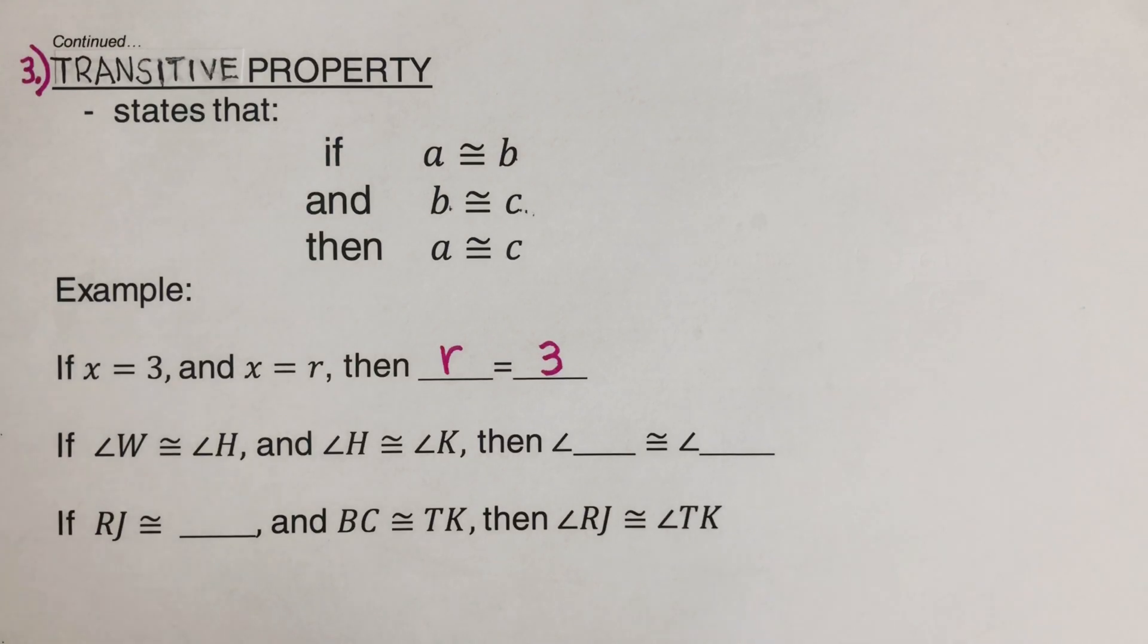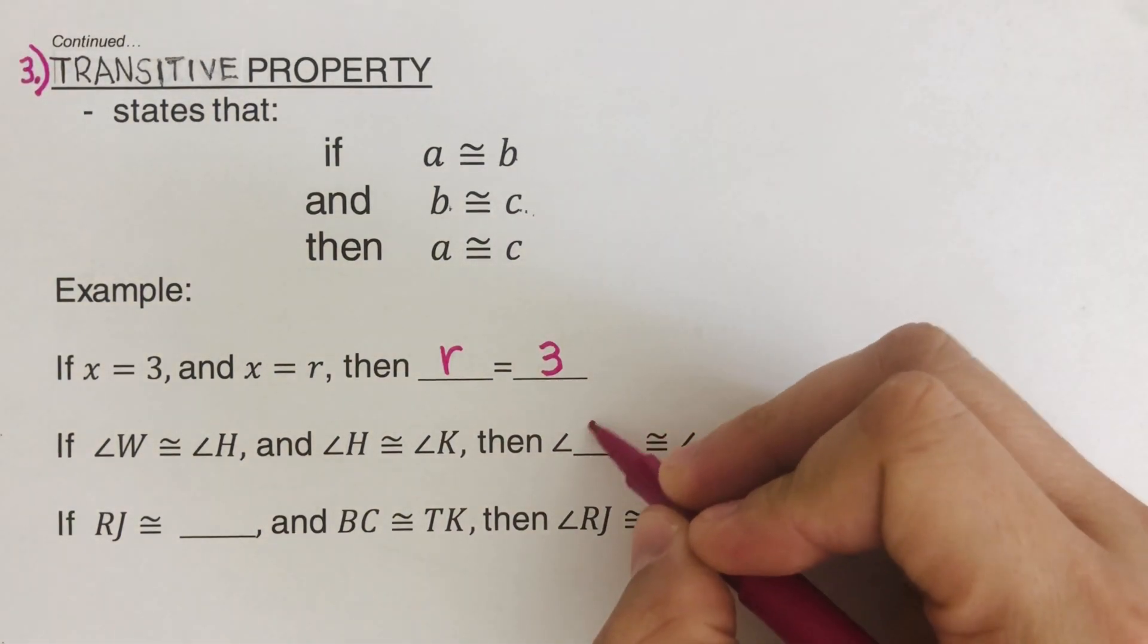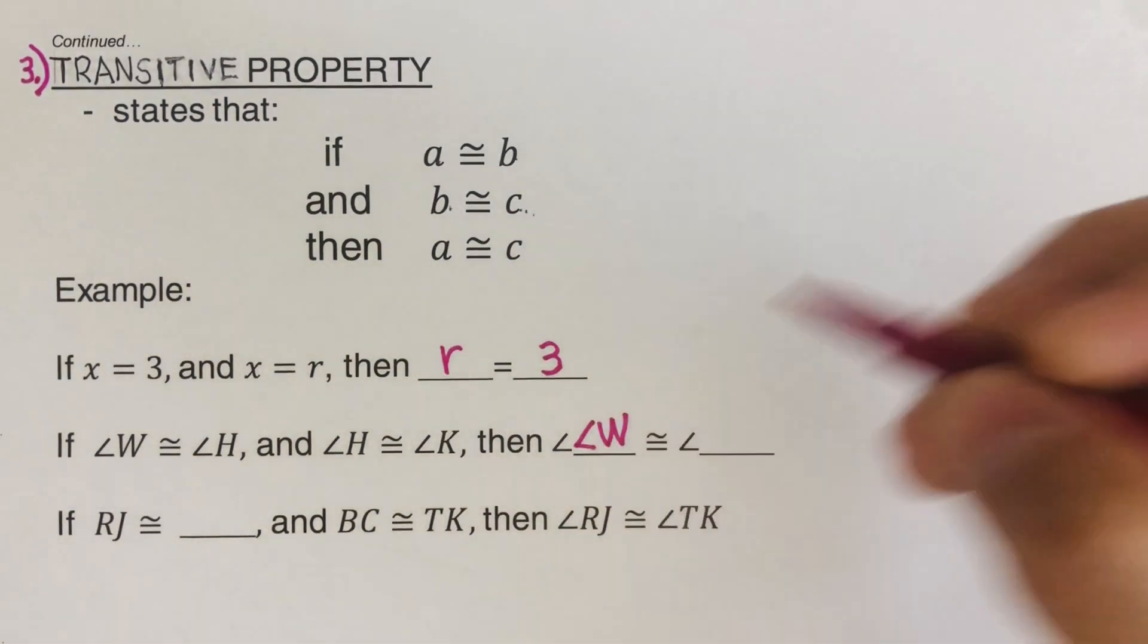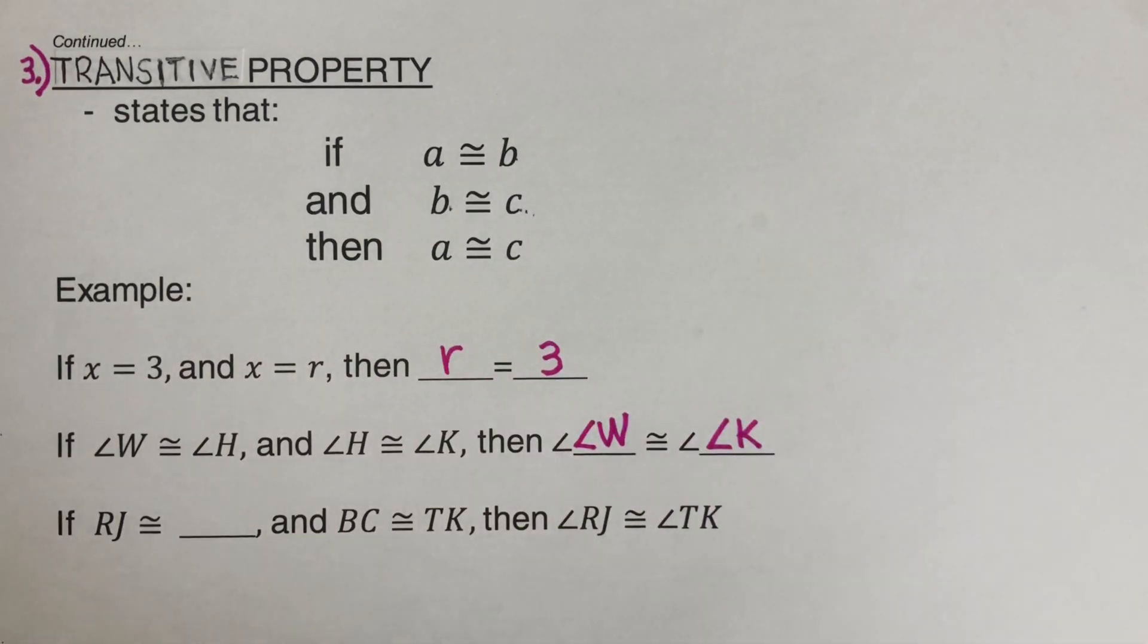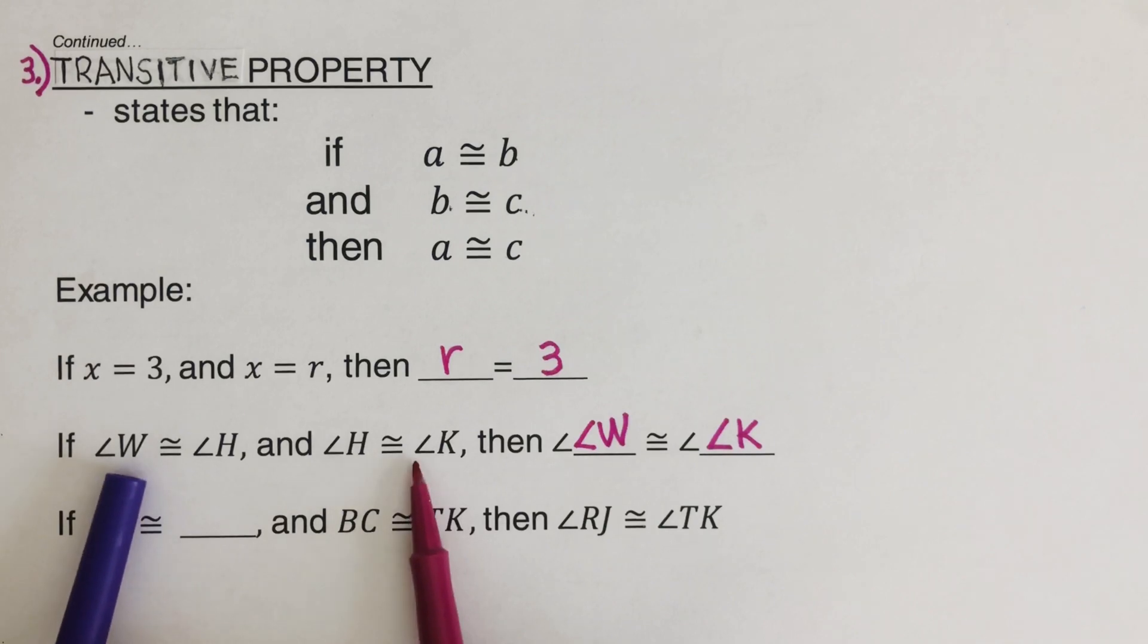Okay. Let's go over this. So if angle W is congruent to angle H and angle H is congruent to angle K. So both W and K angles are congruent to H. So therefore we can go ahead and say angle W is congruent to angle K. So these two are congruent since both of them are congruent to H. Next one right here.